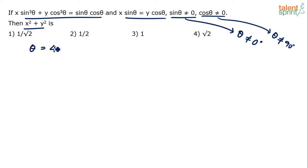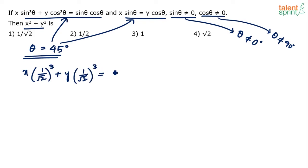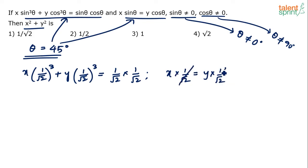Substituting θ = 45° into the two equations: In equation 1, x·(1/√2)³ + y·(1/√2)³ = (1/√2)·(1/√2). In equation 2, x·(1/√2) = y·(1/√2). From equation 2, the 1/√2 terms cancel, giving us x = y.